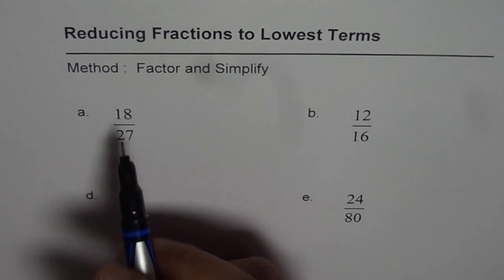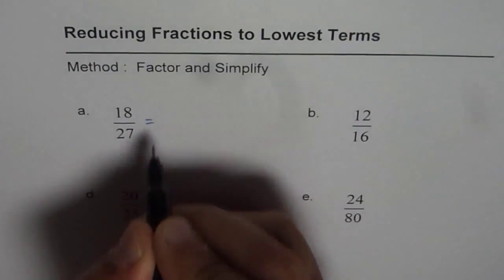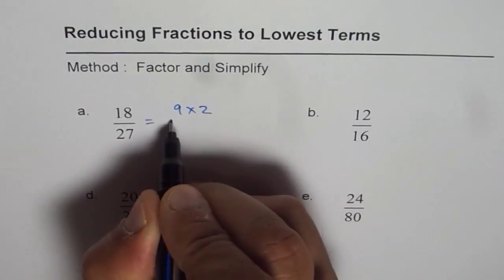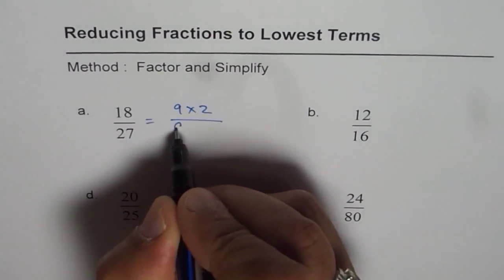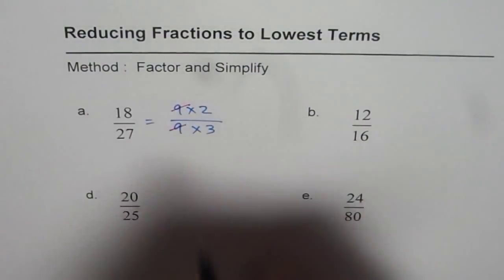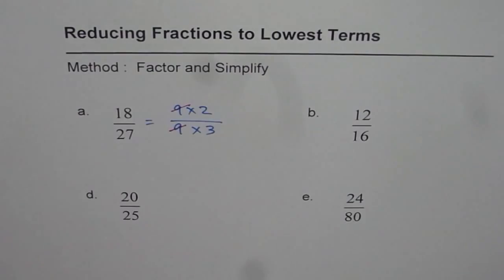So we have 18 over 27. 18 could be written as 9 times 2, and 27 is 9 times 3. It is all about reducing fractions to lowest terms and canceling out the common factors. 9s are common.